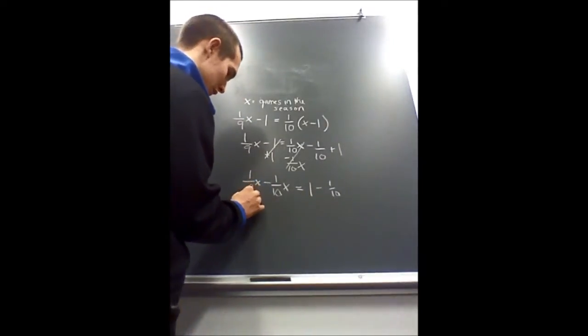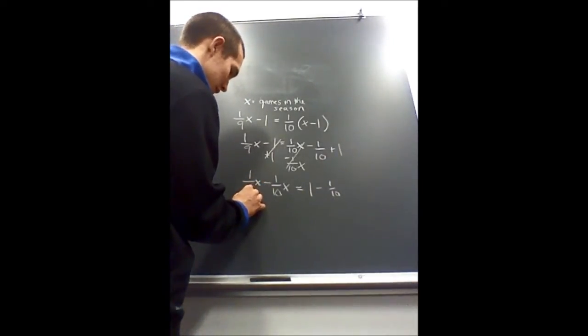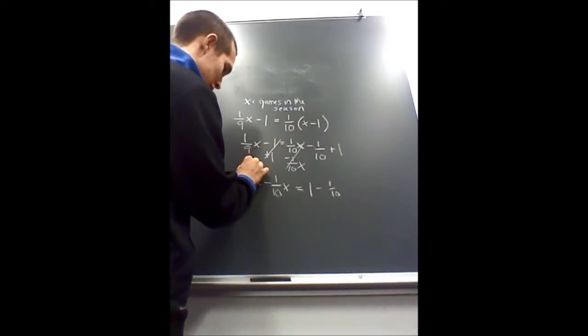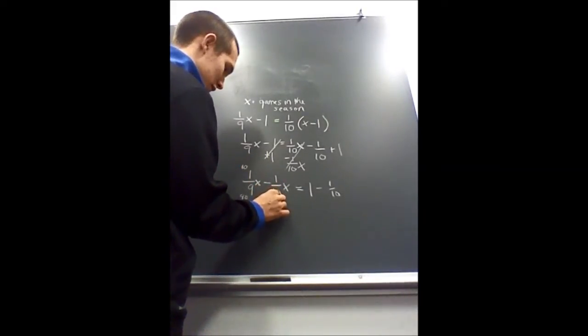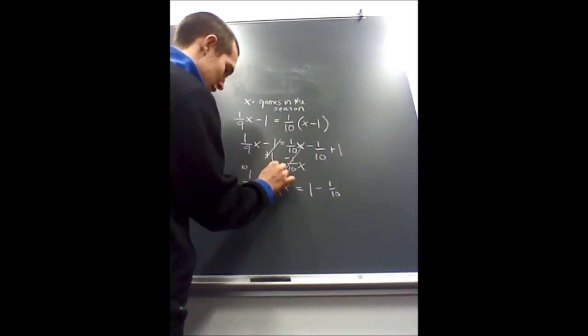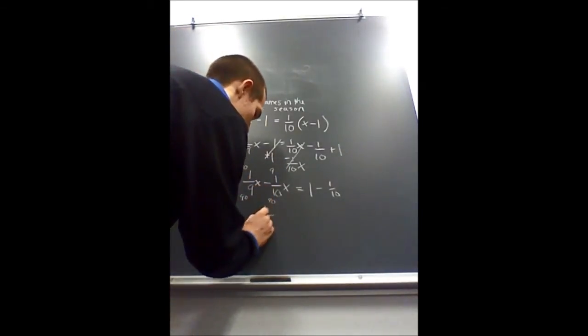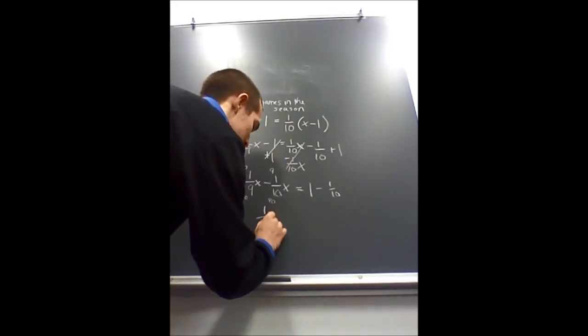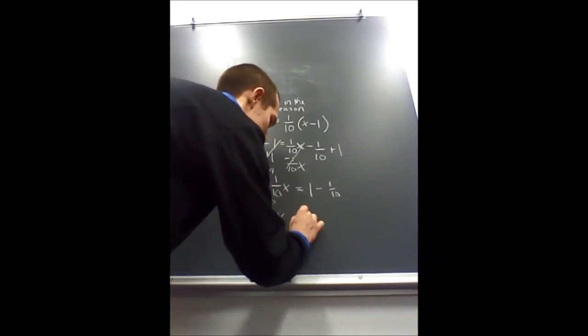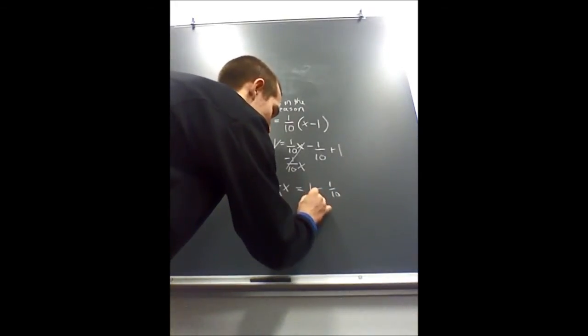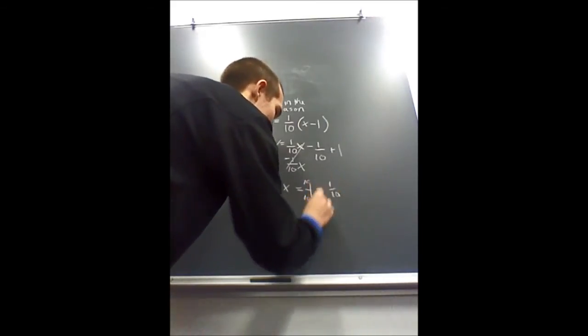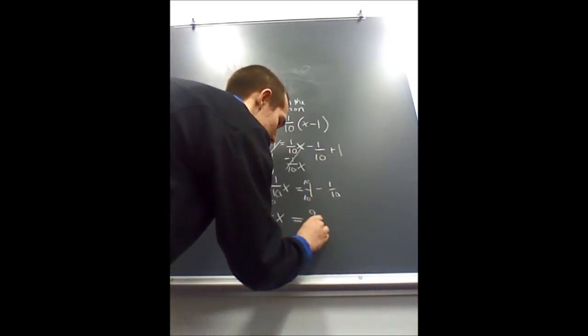If you get a common denominator of 90, this would equal 10 and this would be 9. So you get one over 90 X is equal to, and then you get a common denominator of 10 over here, you would get nine-tenths.